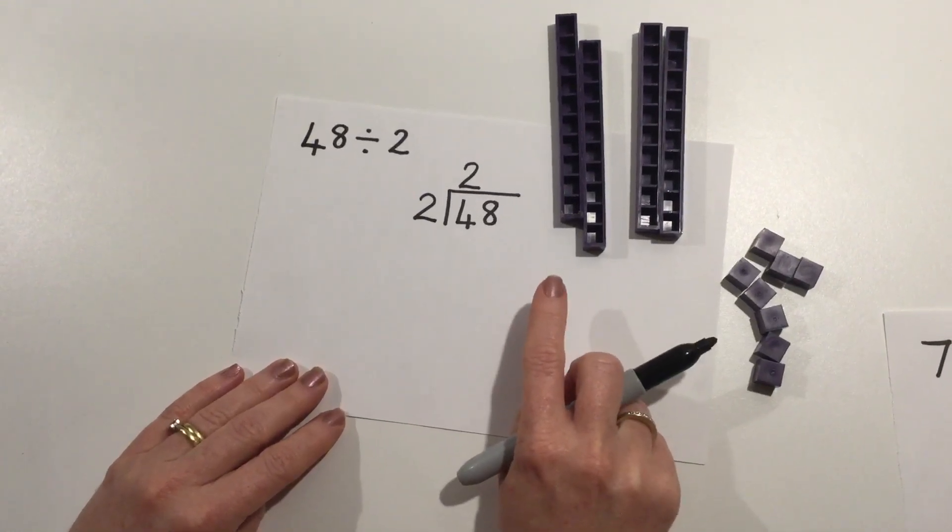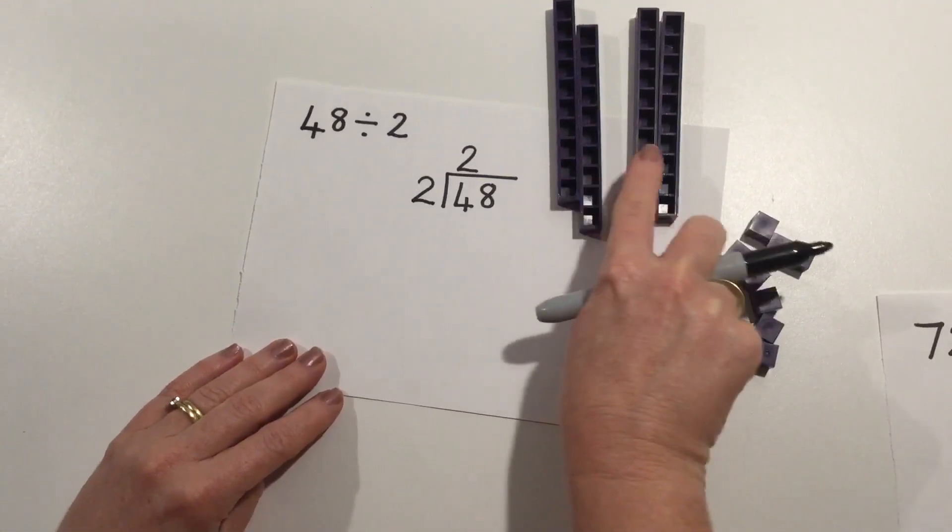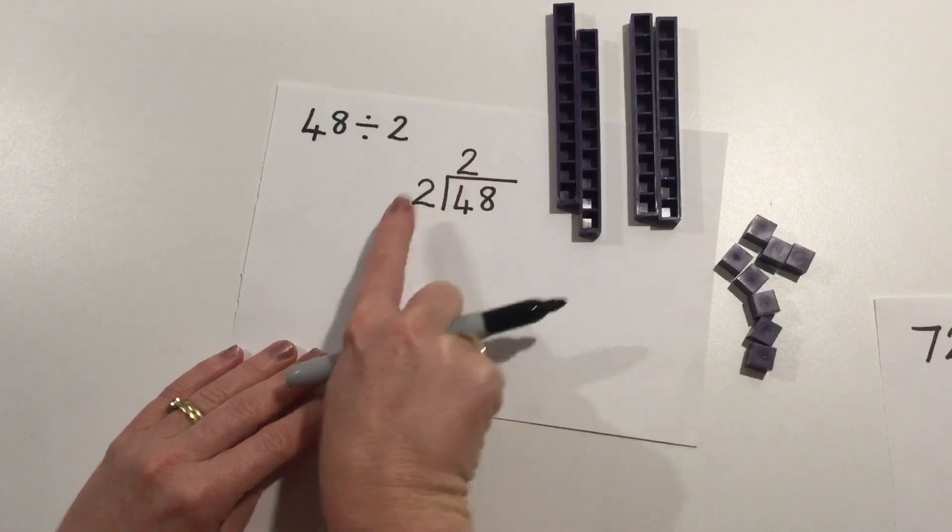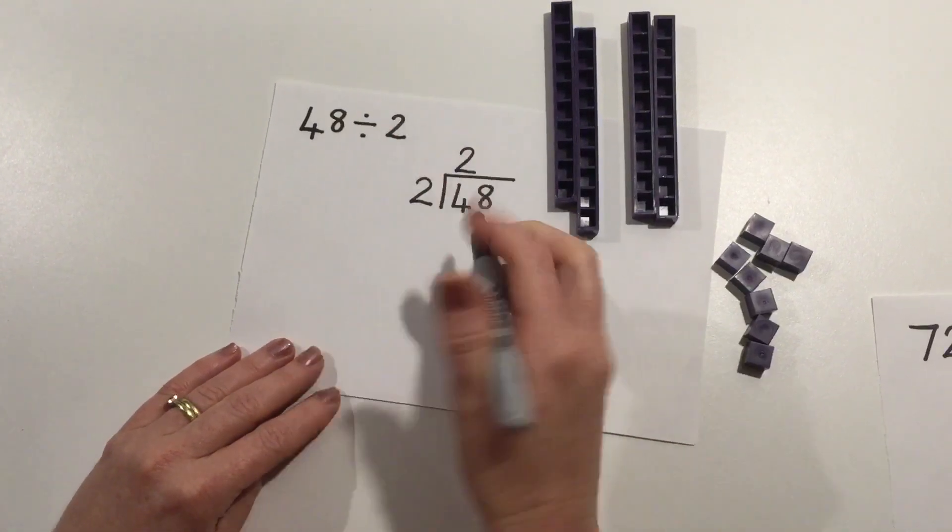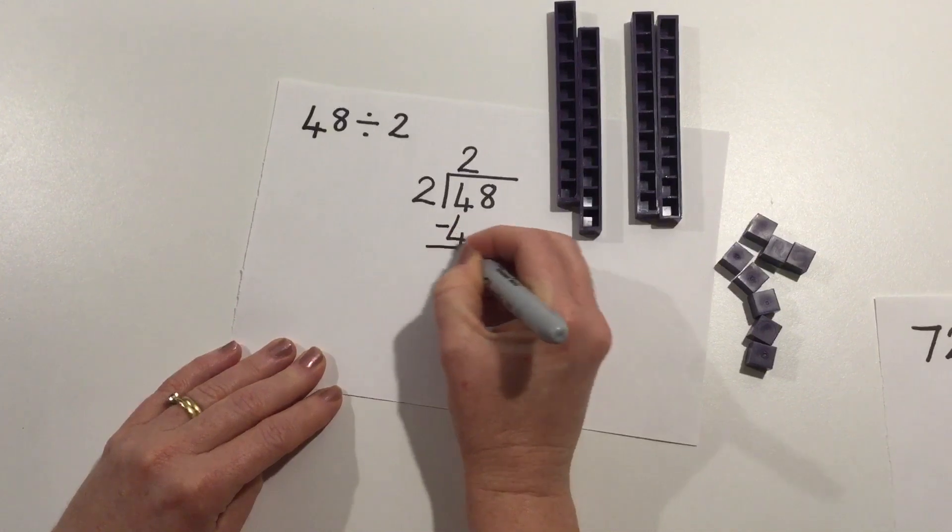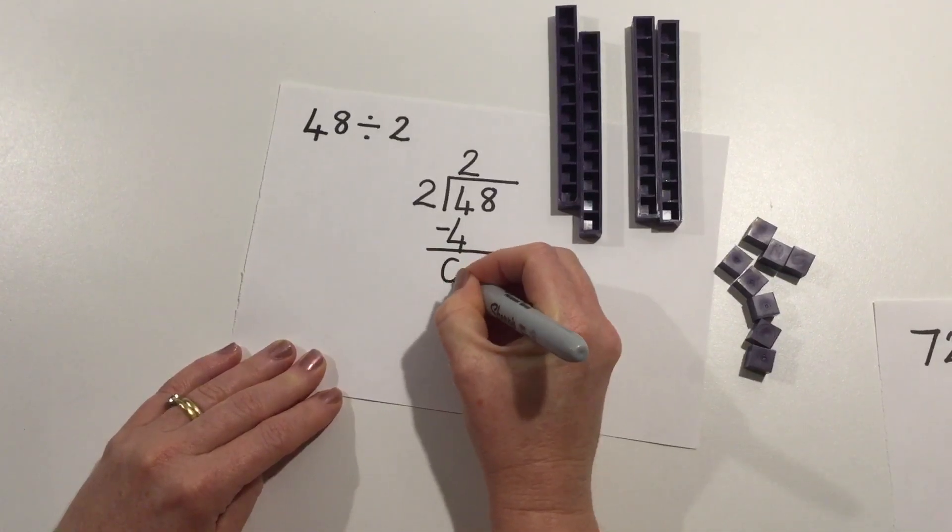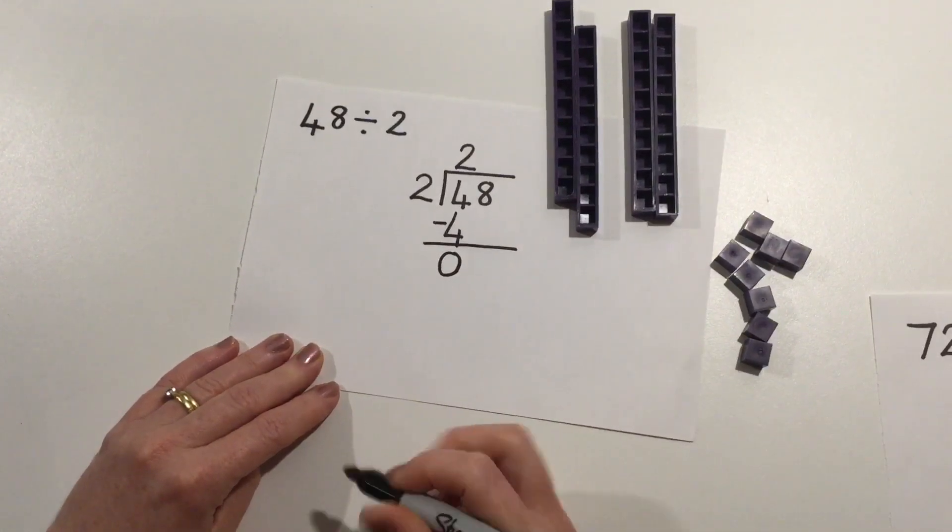How many tens have I used up? I've used up 2, 4, or 2 times 2, which is 2 groups of 2, which shows me that I have no tens left over.